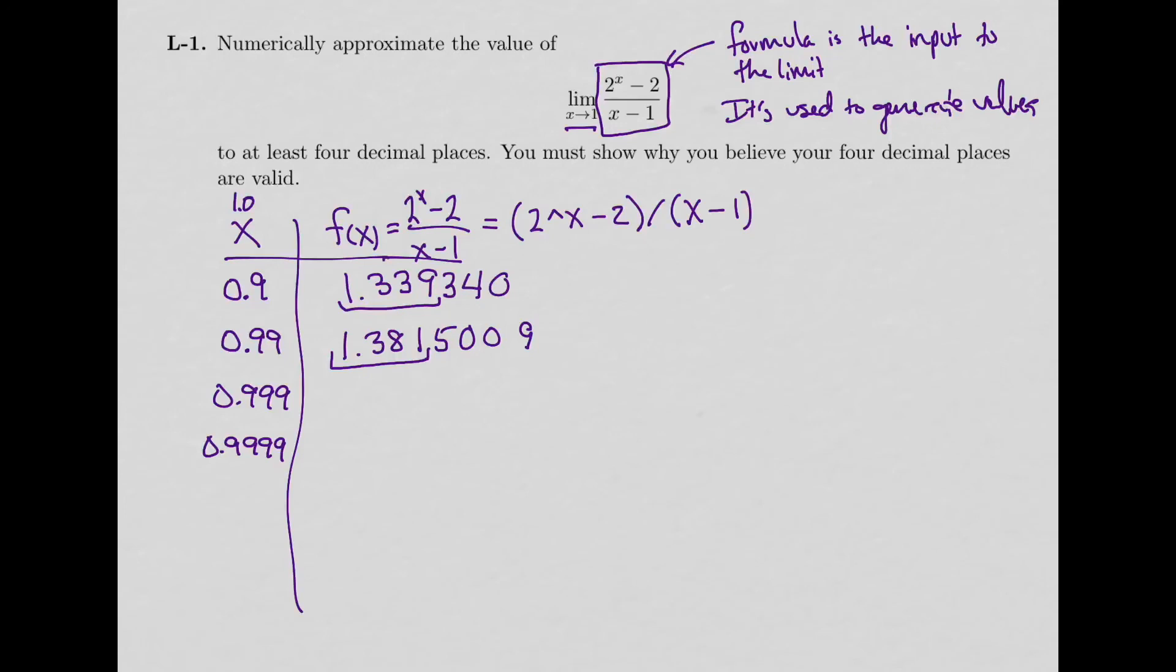This tells me that I'm not far enough into my table to find the right value. So I do the next value, 0.999. 2 to the power 0.999 minus 2, and divide it by 0.999 minus 1. And what do I get? I get 1.385814. So at 4 decimal places I'm still changing. I had 1.381, now I've got 1.385. You can see I'm not changing as fast. It's changing a lot slower.